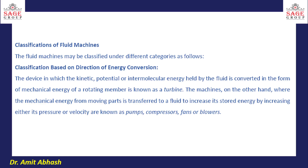Let's start today's session. First, classification of turbo machines is based on the direction of energy conversion. The device in which kinetic, potential, or intermolecular energy held by the fluid is converted into mechanical energy of a rotating member is known as a turbine. On the other hand, if electrical energy is converted into fluid energy — flow energy, kinetic energy, or potential energy — that is known as a pump, compressor, fan, or blower.